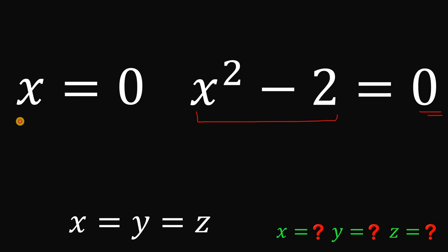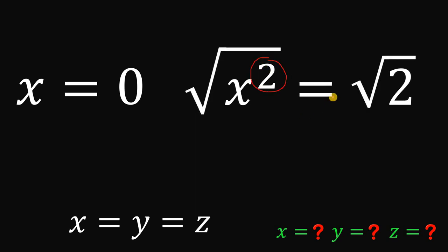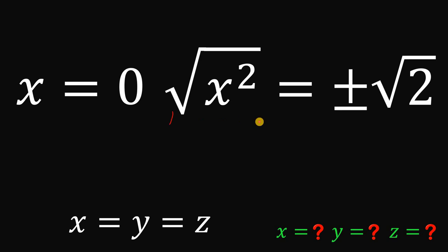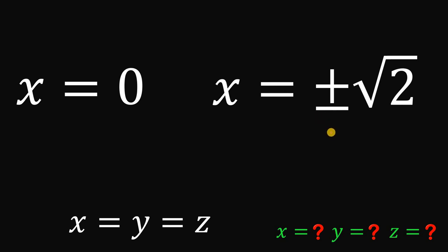For the first value of x, we have x equals 0. For the other values of x, we use x squared minus 2 equals 0. Adding 2 on both sides gives x squared equals 2. Taking the square root of both sides — noting that we have an even exponent, so there are two possible values — we get x equals positive or negative square root of 2. So we have three values for x: x equals 0, x equals positive square root of 2, or x equals negative square root of 2.